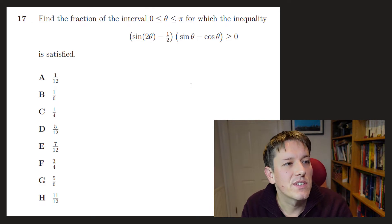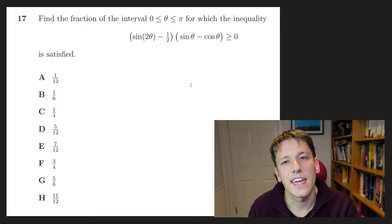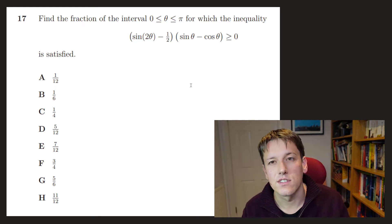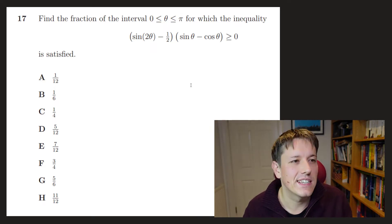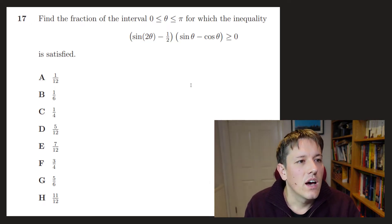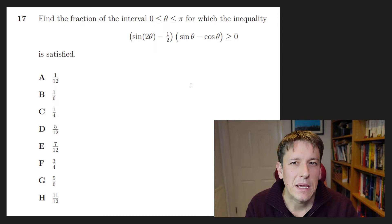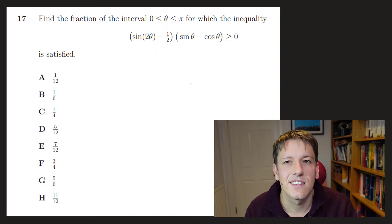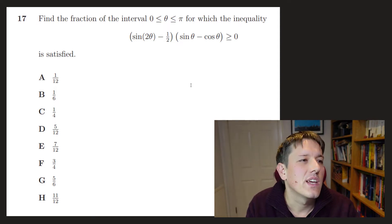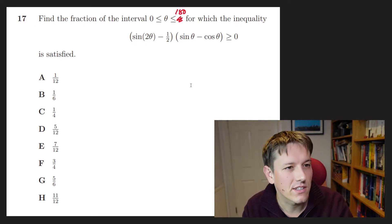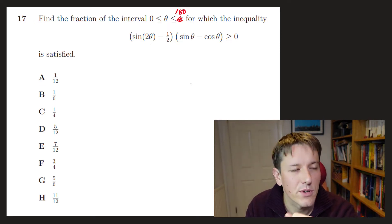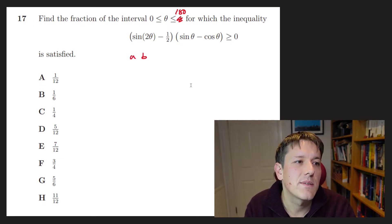Question 17 asks for the fraction of the interval 0 to π for which the inequality is satisfied. If you've done further maths you might try double angle formulas, but this is based on AS maths so there must be an easier way. Since we're looking for a fraction of the interval, it doesn't matter if we work in radians or degrees — I'll work in degrees, from 0 to 180.